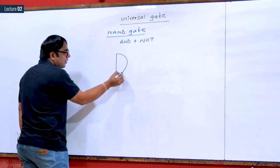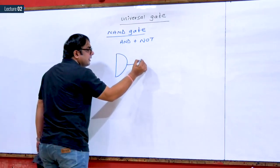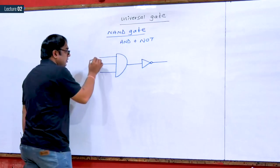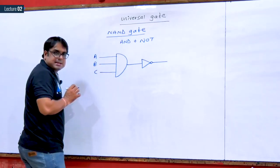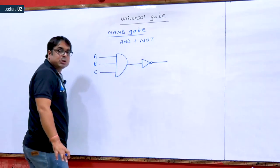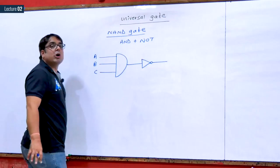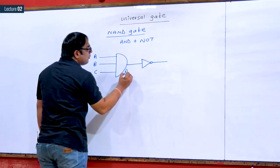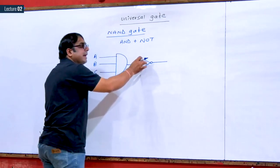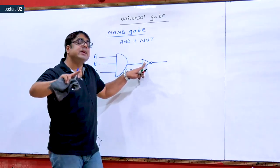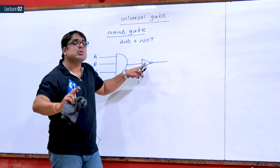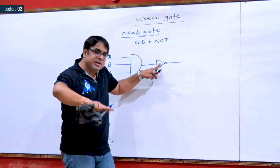So, AND gate followed by a NOT gate. Let me name the inputs as A, B and C. Inputs are applied to an AND gate, and the output of the AND gate is applied to the NOT gate. The output of an AND gate is A·B·C. The NOT gate is also called an inverter because it inverts the logic, complementing the input to give the output.